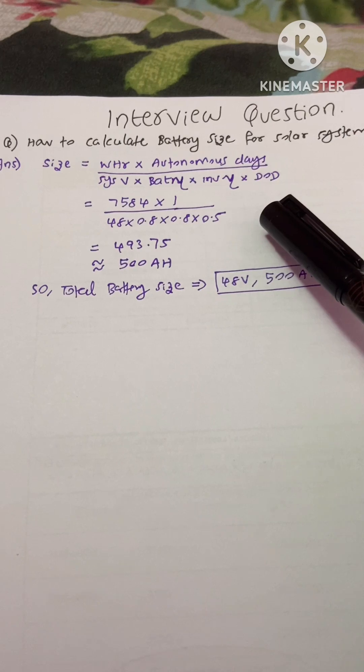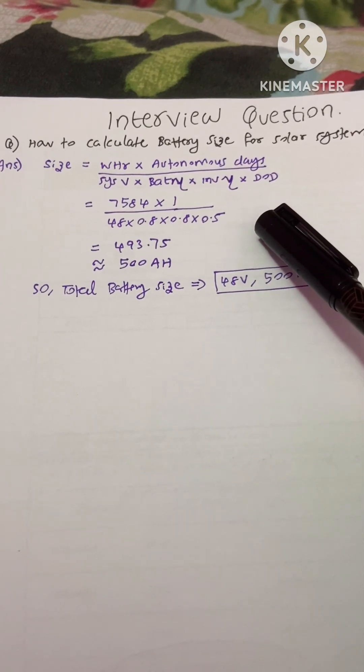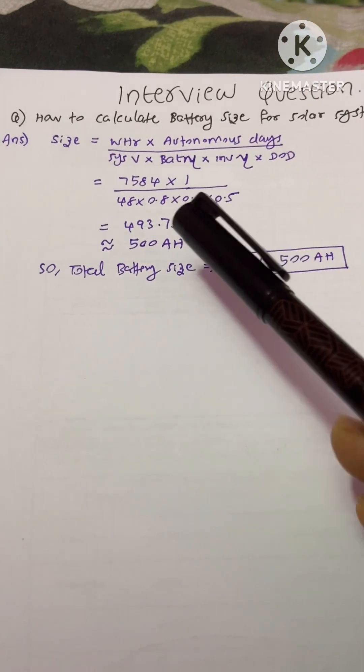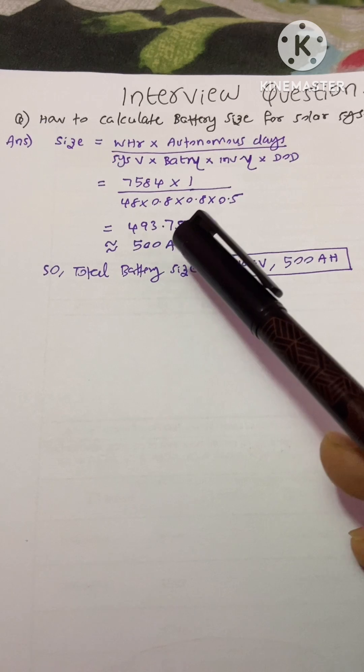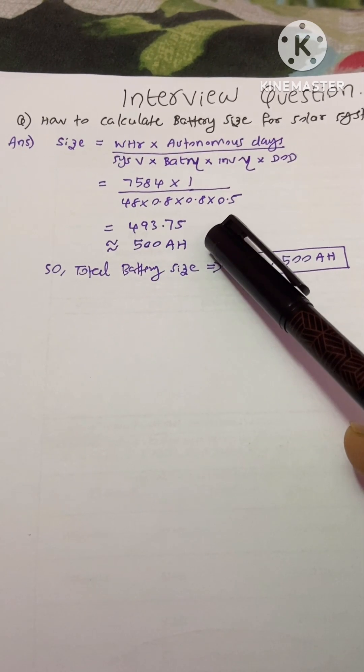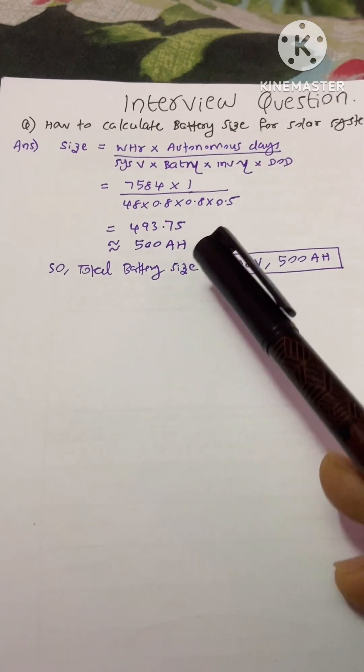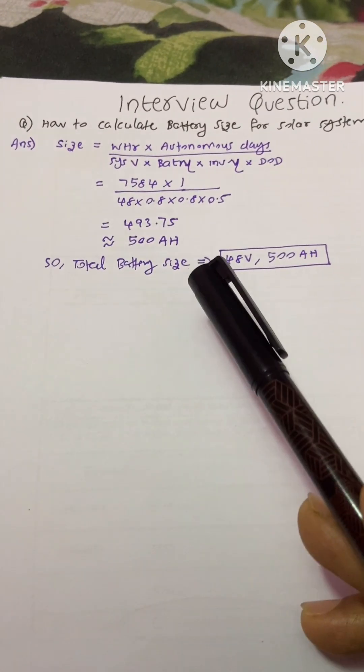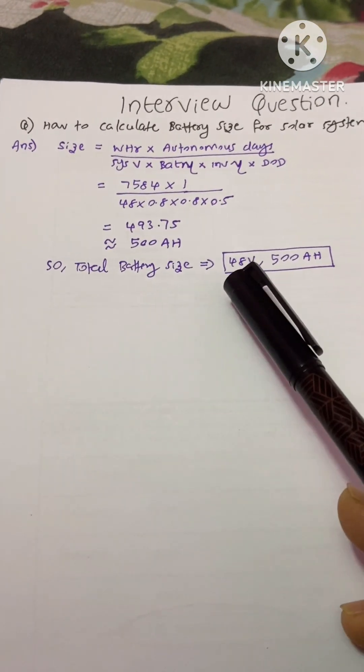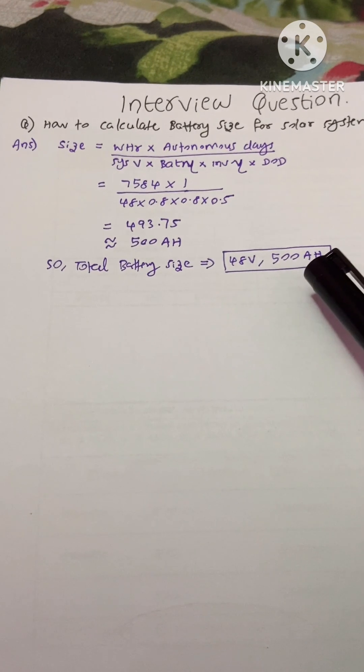If you take more DOD then your battery life will be lesser. We got the answer 493.75 Ah, approximately 500 Ah ampere hour. So the total battery size is 48 volt 500 Ah.